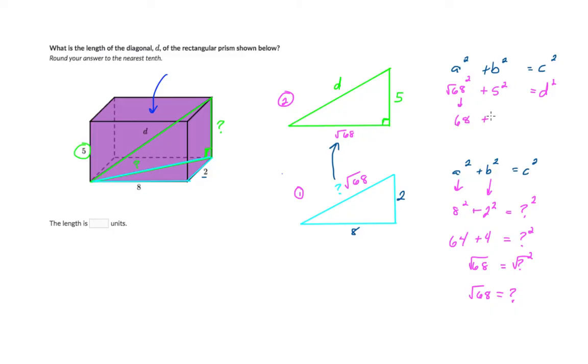Now five squared is 25 and this is equal to D squared. We combine like terms you end up getting 68 plus 25, 88, 93 equals D squared and if I take the square root of both sides I believe the answer to this D is equal to 9.64.